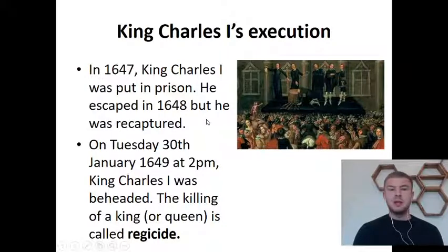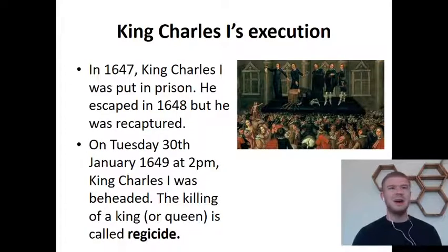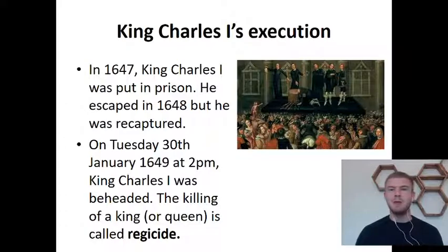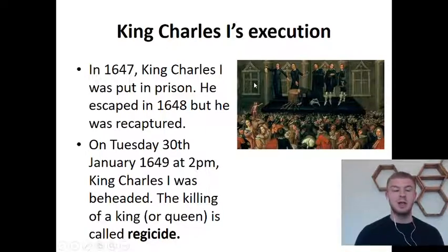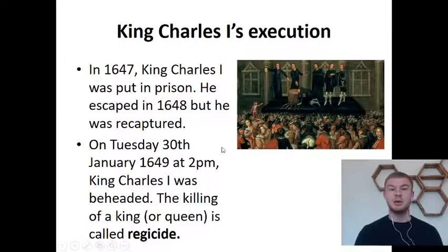It was an eventful next couple of years for King Charles. In 1647 he was put into prison, but he escaped in 1648 and was recaptured. The Parliamentarians were in a difficult situation — as much as many didn't believe in the divine right of kings, they worried: if a king has been put in by God, are we going against God by killing him? But the decision was made. On Tuesday the 30th of January 1649, King Charles I was beheaded. There's a fancy word for the killing of a king or queen — regicide — and regicide was committed on the 30th of January 1649.